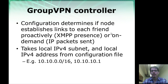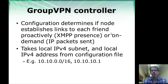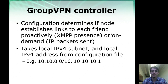In GroupVPN, we have an option where a node coming online, or an XMPP presence message as we saw earlier, may or may not create a connection right away. We may decide to create a connection on demand once packets are sent between two endpoints. As far as configuration, GroupVPN also takes an IPv4 subnet and a local IPv4 address from the configuration file.